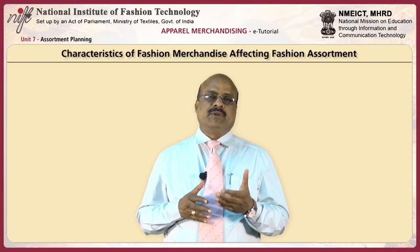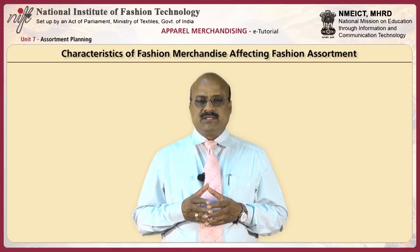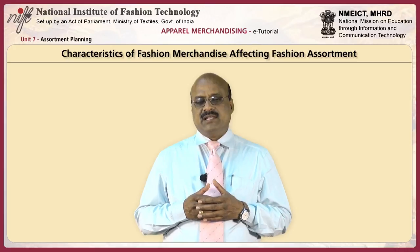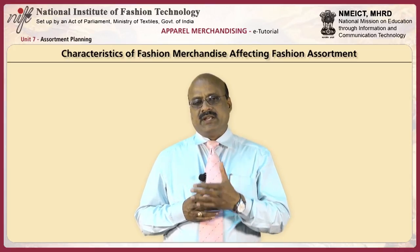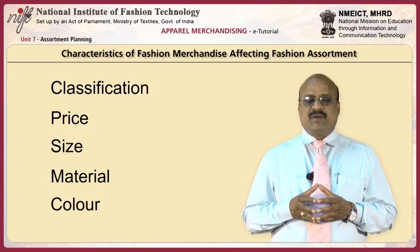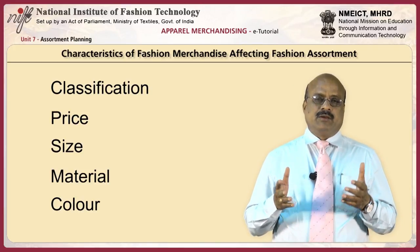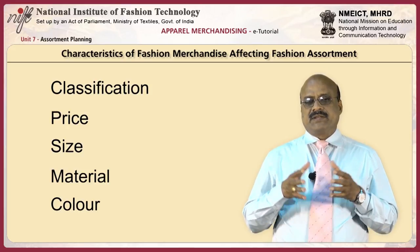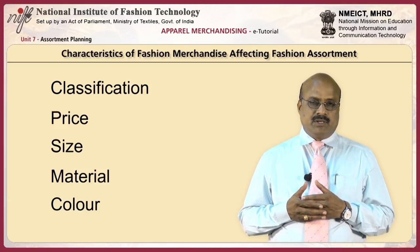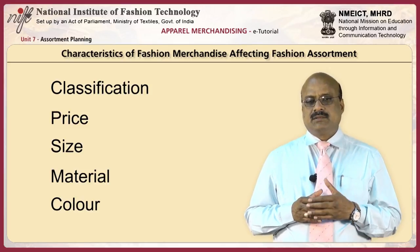Fashion stock in both apparel and home furnishings is the most difficult of all classes of merchandise to plan for, because of the many choices of styles, colours, materials, vendors, manufacturers, and new items available. Since fashion goods have a short life cycle, the risks in fashion buying are high. Five characteristics of fashion merchandise will assist the buyer in determining the fashion assortment: classification, price, size, material, and colour.